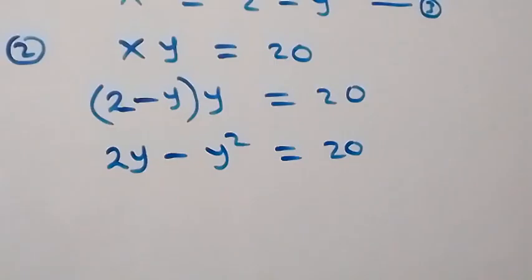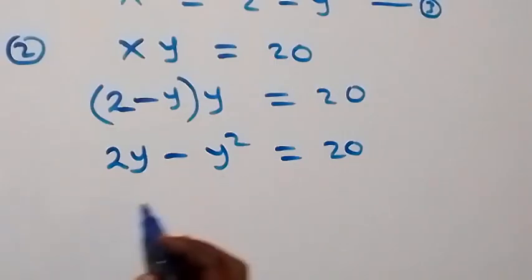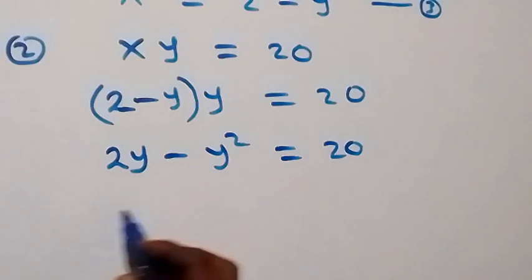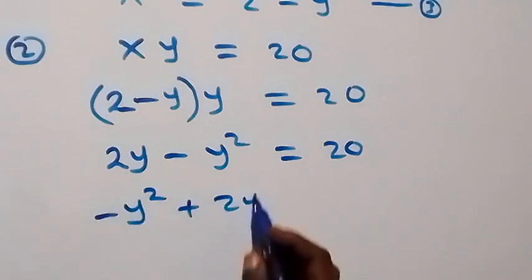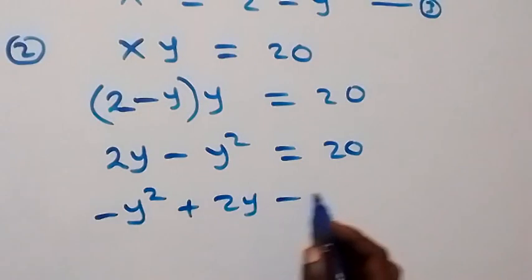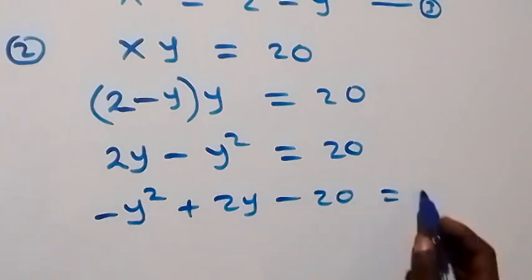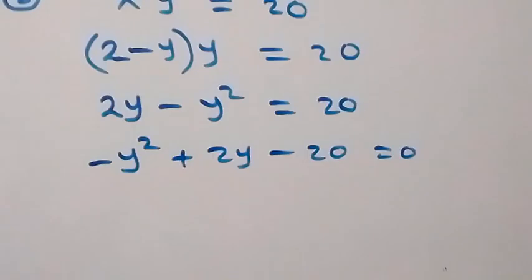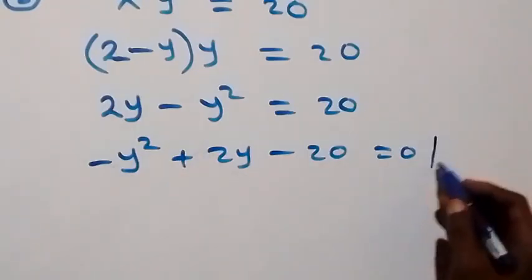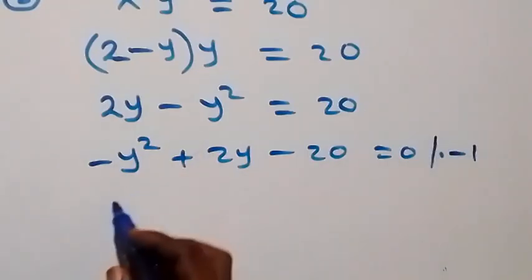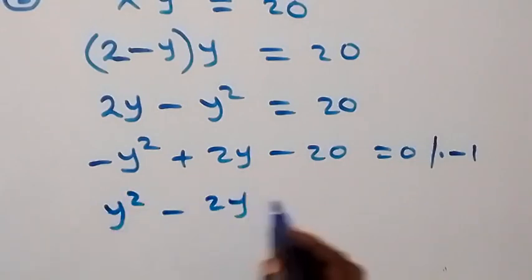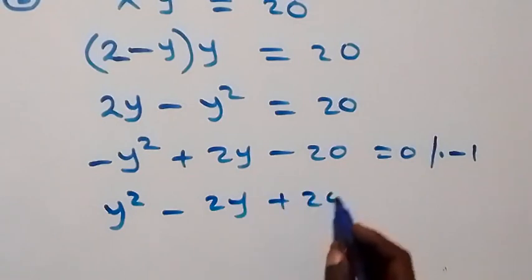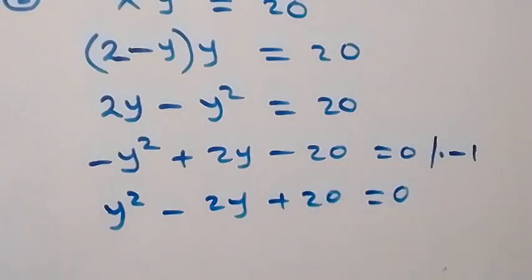Let's rearrange and bring 20 across. So we have minus y squared plus 2y minus 20 equals to 0. Multiplying through by minus 1, this becomes y squared minus 2y plus 20 equals to 0.